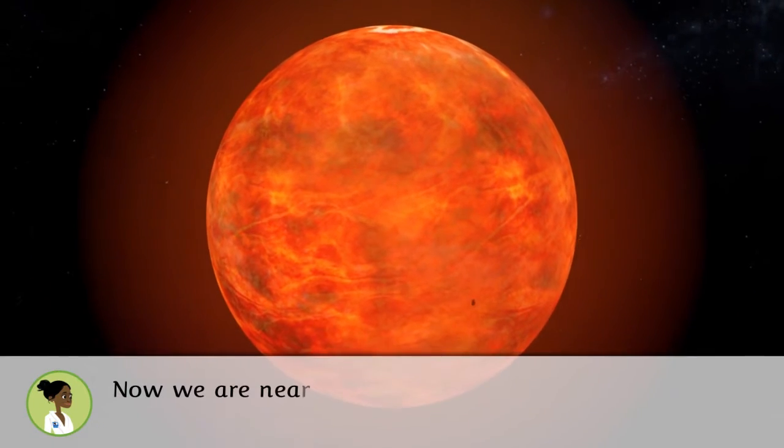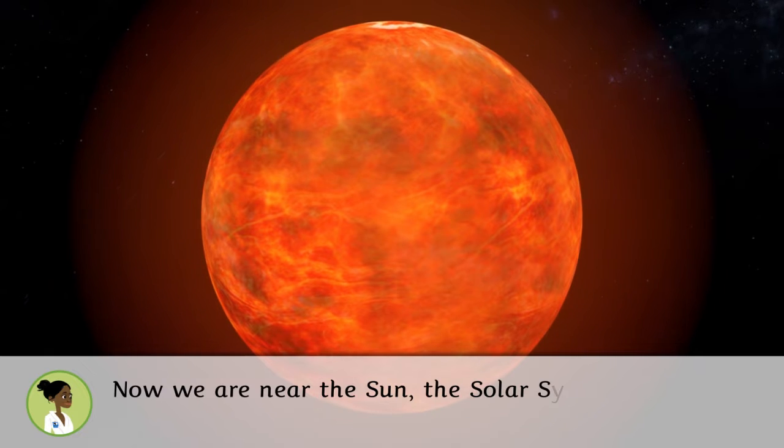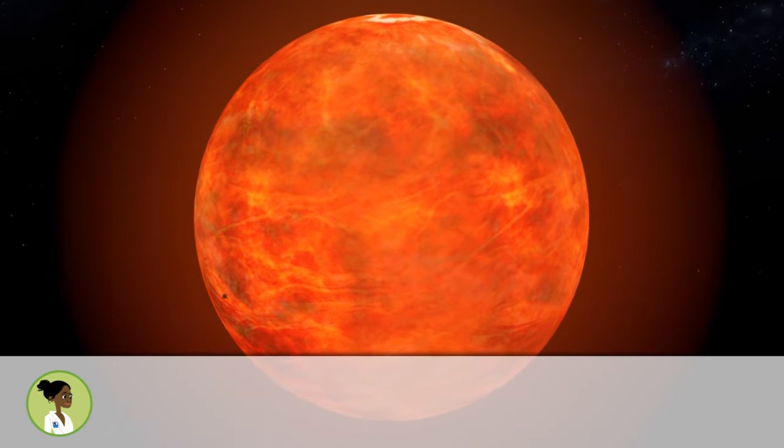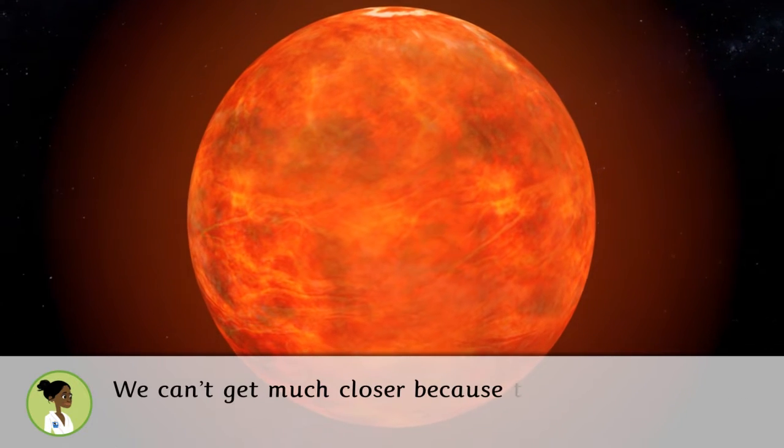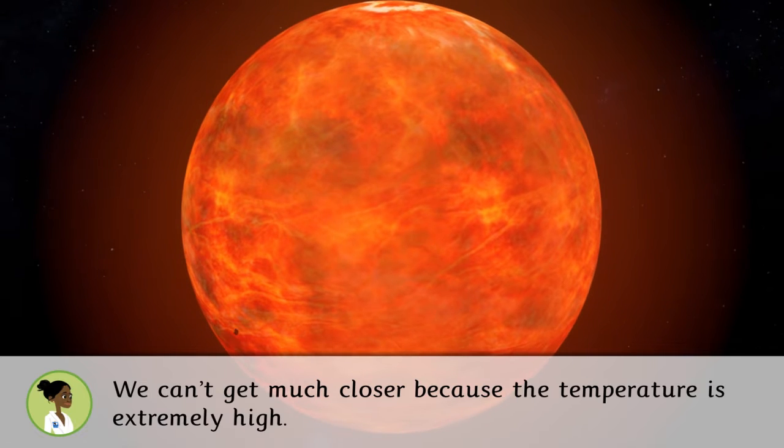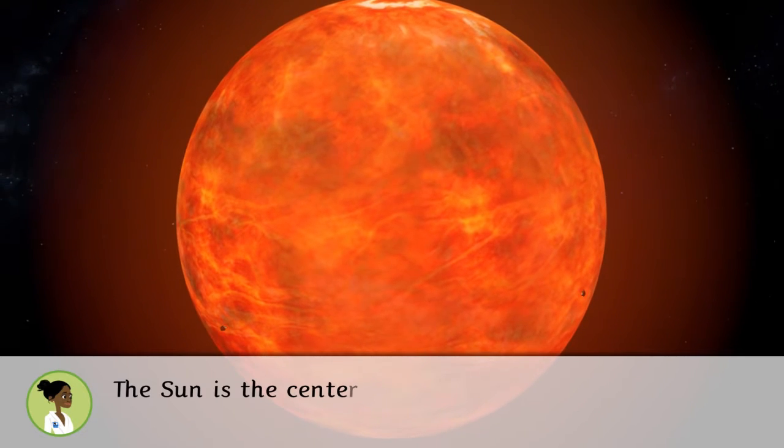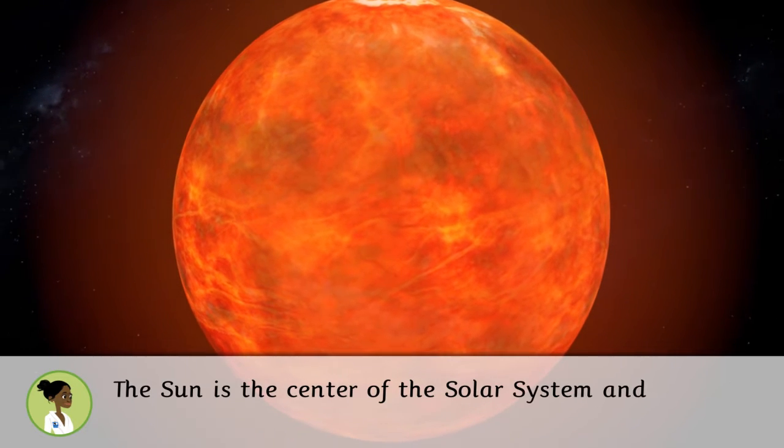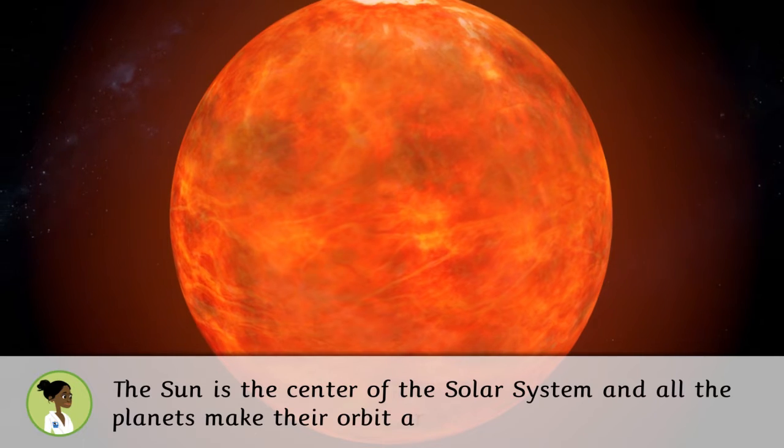Now we are near the Sun, the solar system's only star. We can't get much closer because the temperature is extremely high. The Sun is the center of the solar system and all the planets make their orbit around it.